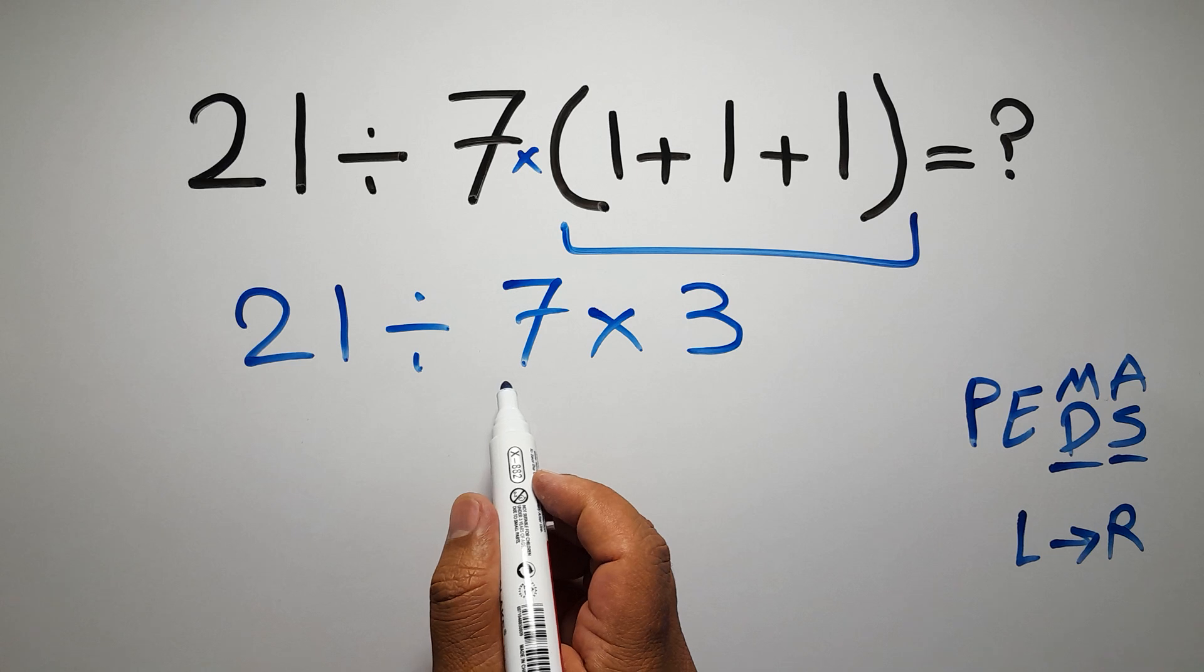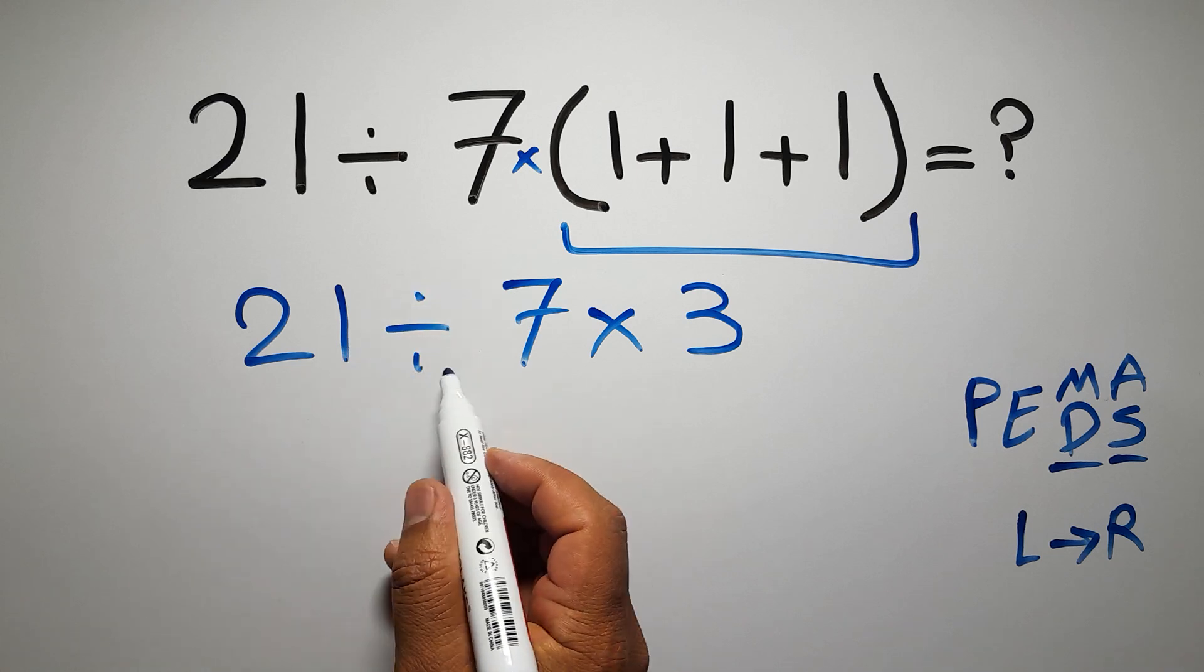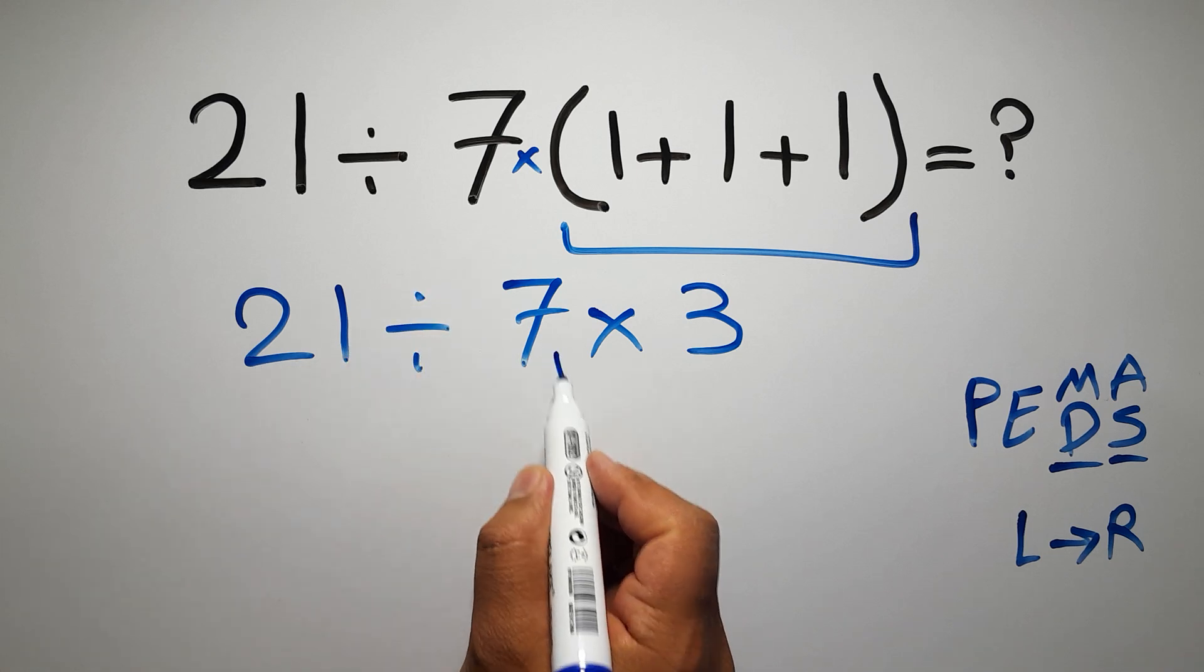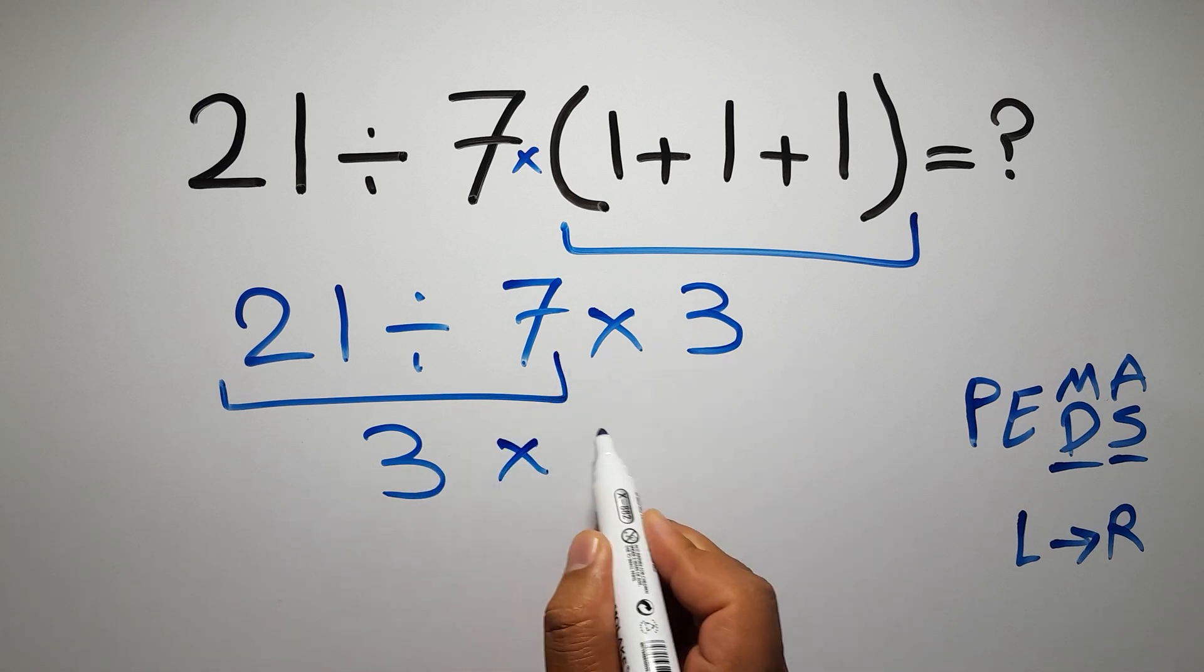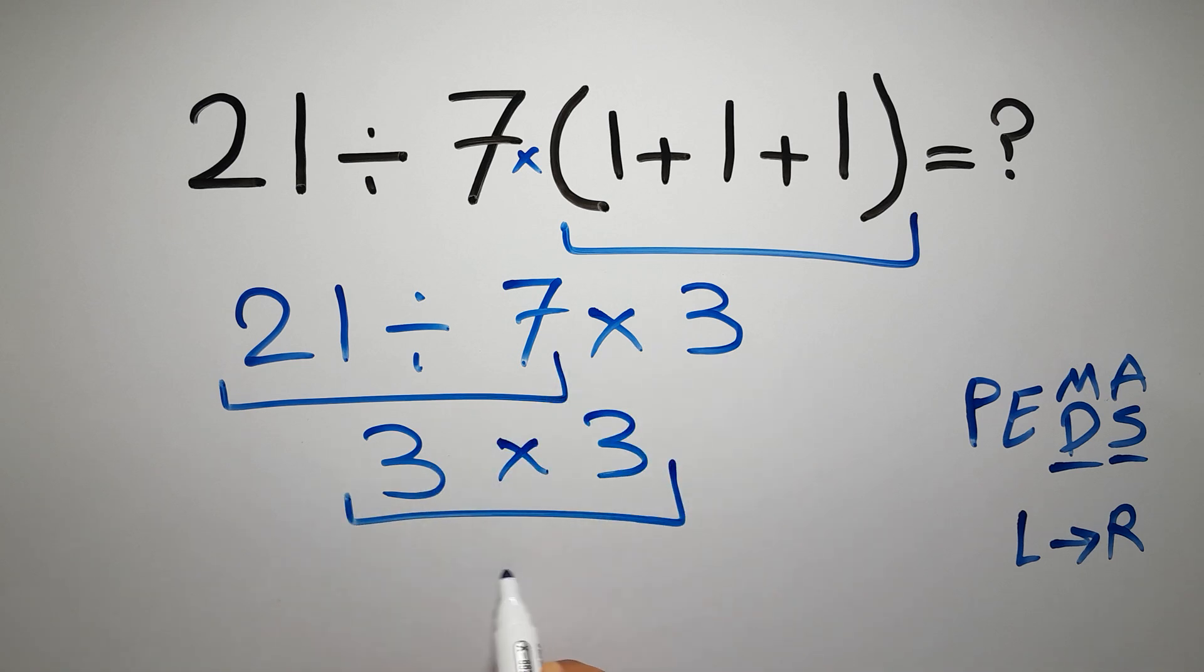So here, first we have to do this division. 21 divided by 7 gives us 3. So we have 3 times 3, which equals 9.